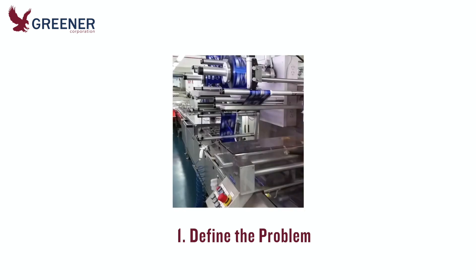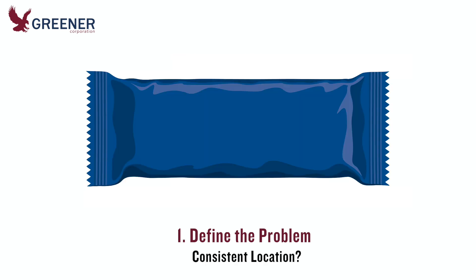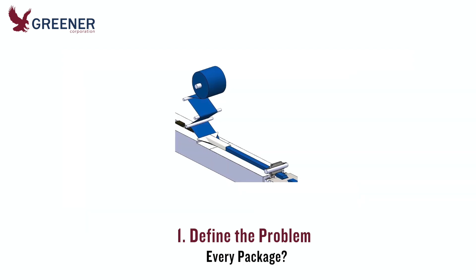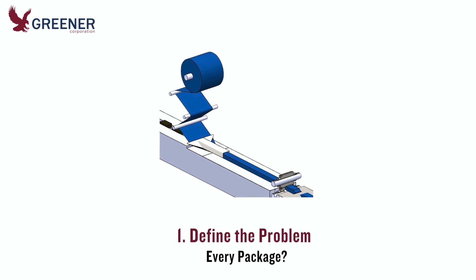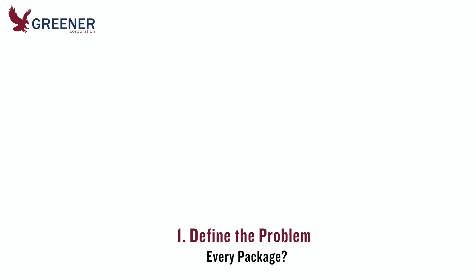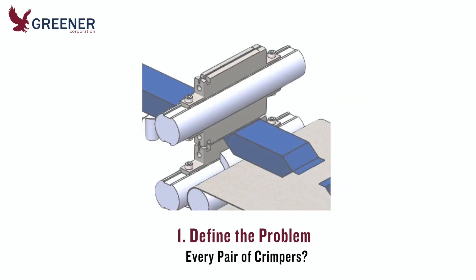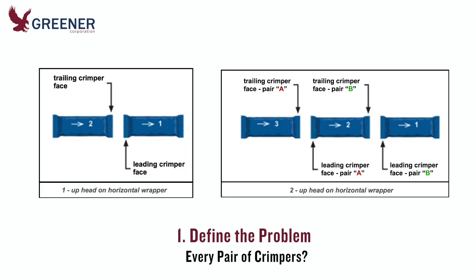Let's further clarify when and where the problem exists. Is the leak or appearance issue always in the same location on the package? Does the problem occur on every package or intermittently? If using a multi-crimper sealing head, does the problem occur on every pair of crimpers? Track the problem to see if it appears on the leading seal, the trailing seal, or on both.